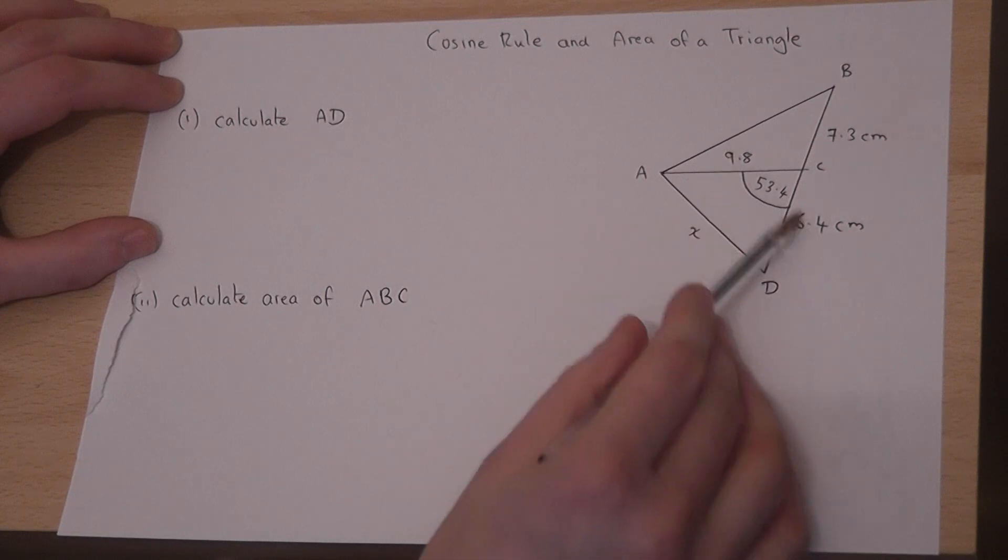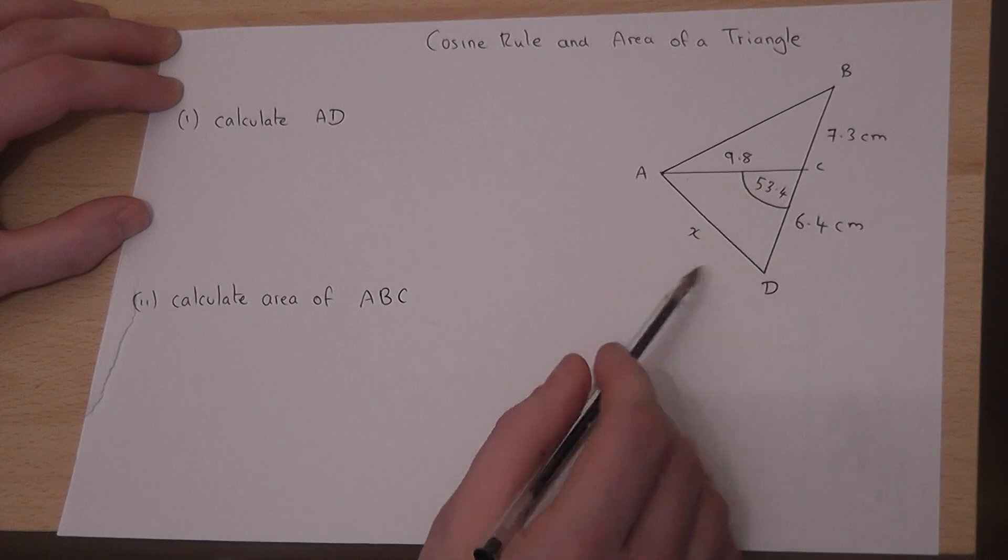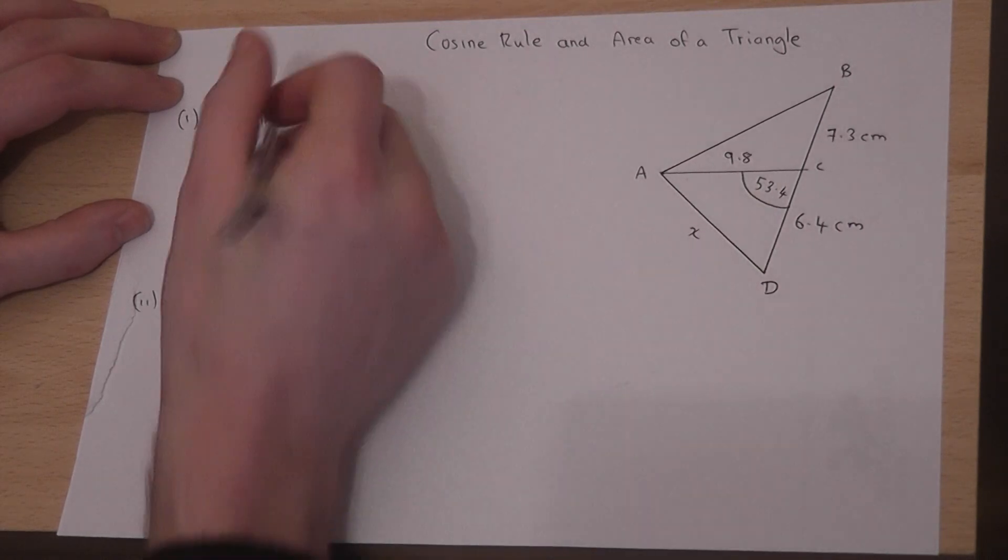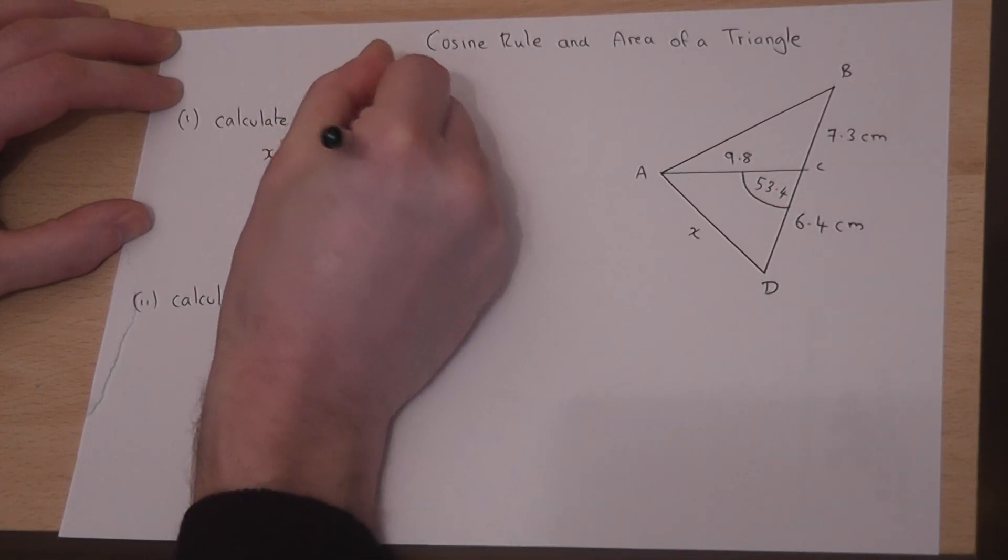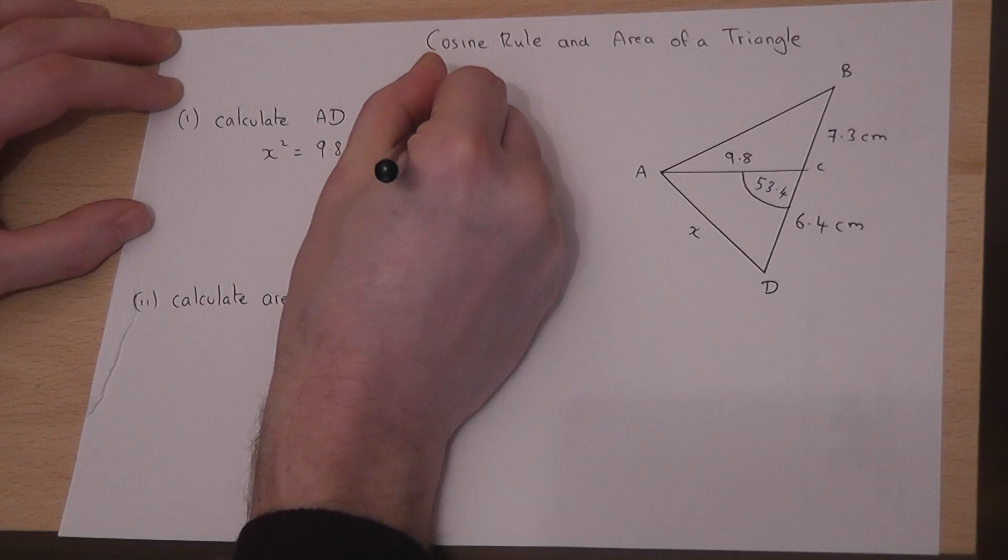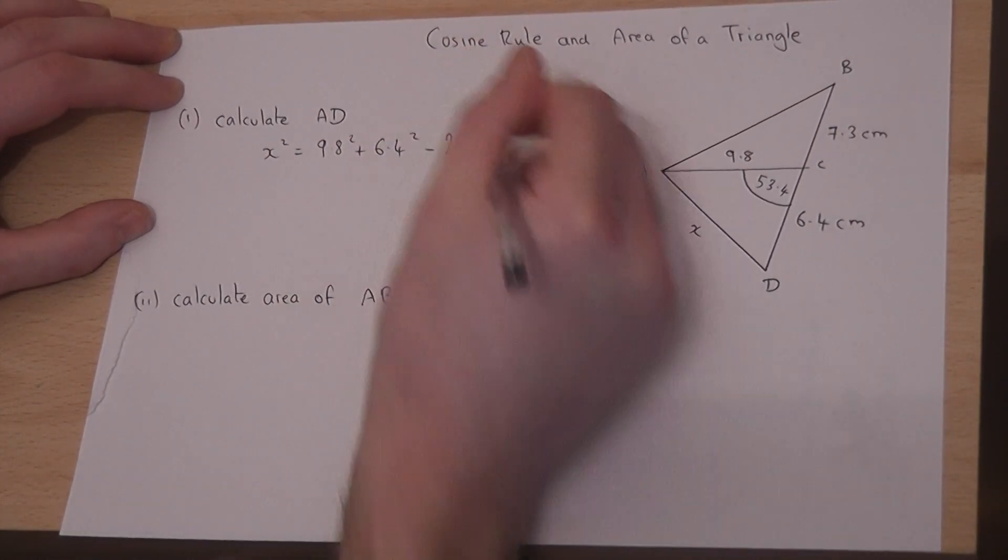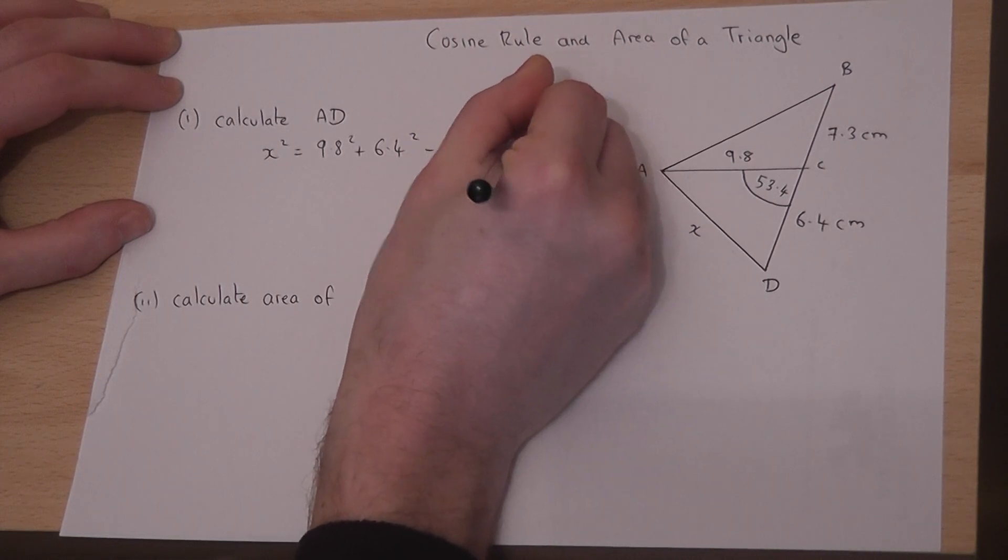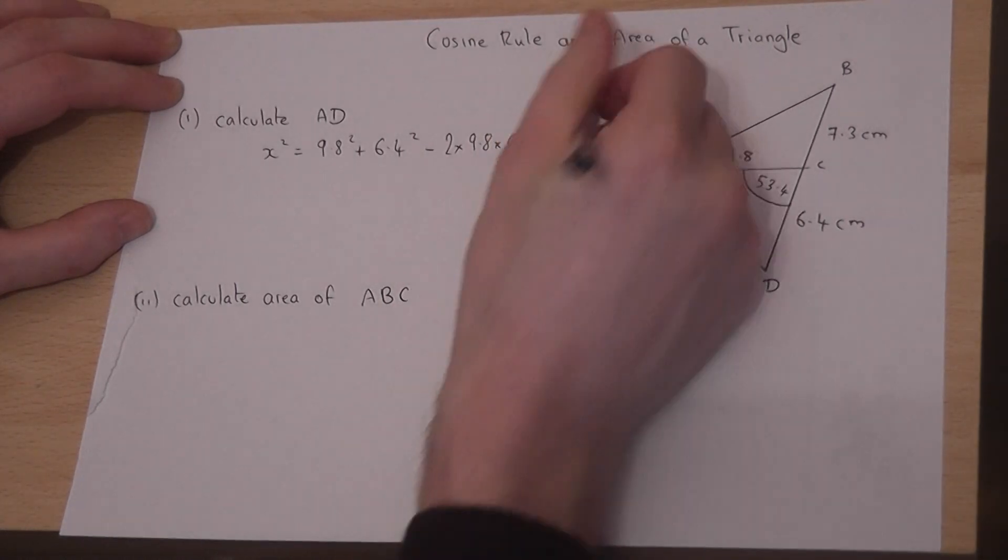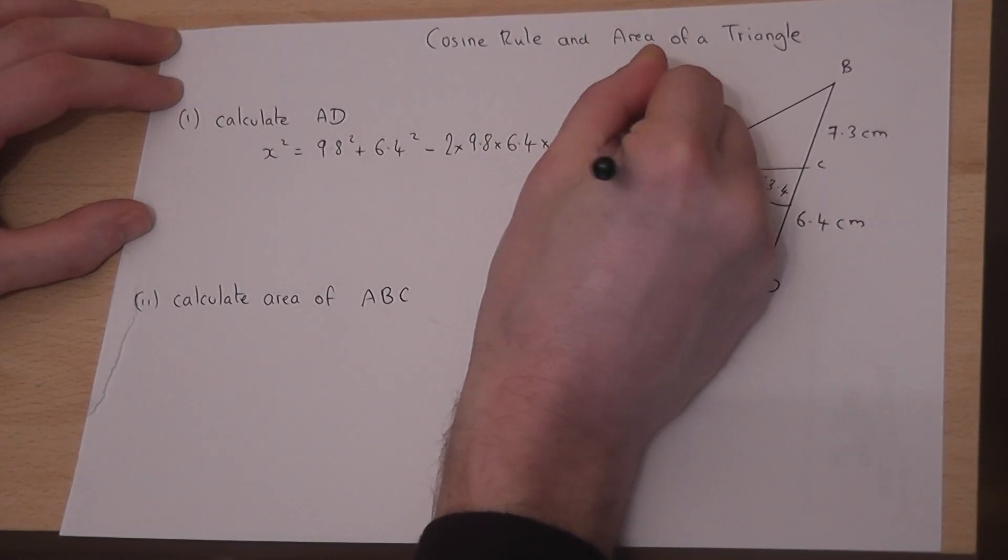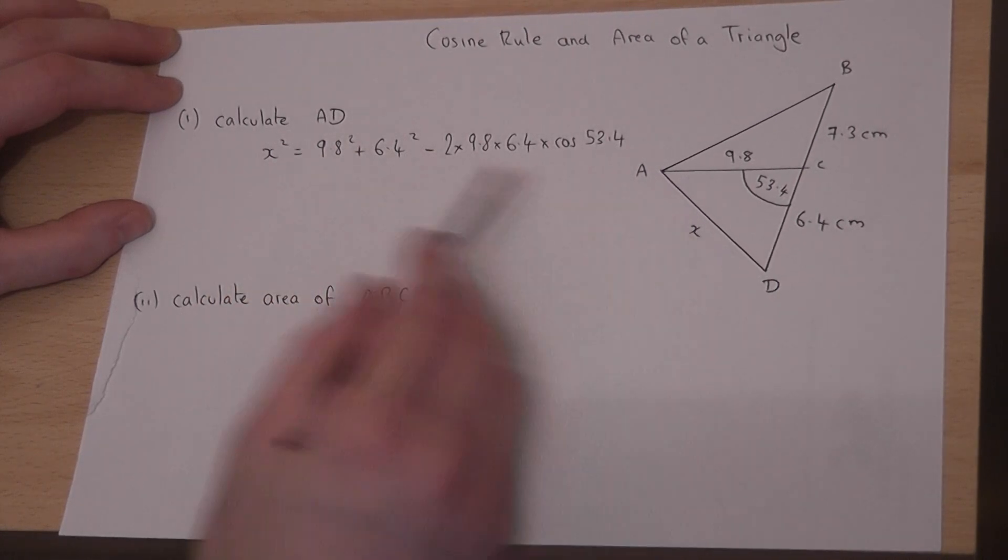Because we know the two sides and the opposite angle, we can use the cosine rule which tells us that x squared must equal 9.8 squared plus 6.4 squared minus 2 lots of 9.8 times 6.4 times cos of the angle, 53.4. This formula gives us a value for the side we want squared.